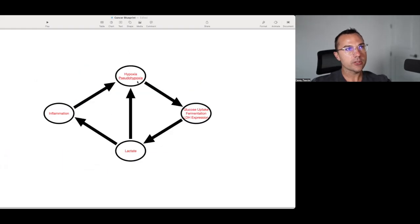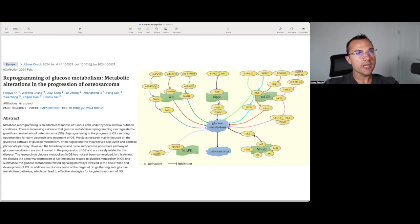That's going to lead to the stabilization of hypoxia factors. Those hypoxia factors are going to then upregulate glucose uptake, glucose fermentation, and lactate dehydrogenase expression. Then, when glucose is fermented through lactate dehydrogenase, we're going to make lactate. Lactate is going to lead to inflammation, and lactate is going to lead to pseudo-hypoxic state, which then round and round we go. Because then the inflammation that's made by lactate is going to then be also a pseudo-hypoxic stimulus. You can see how this is like a vicious, vicious, vicious cycle.